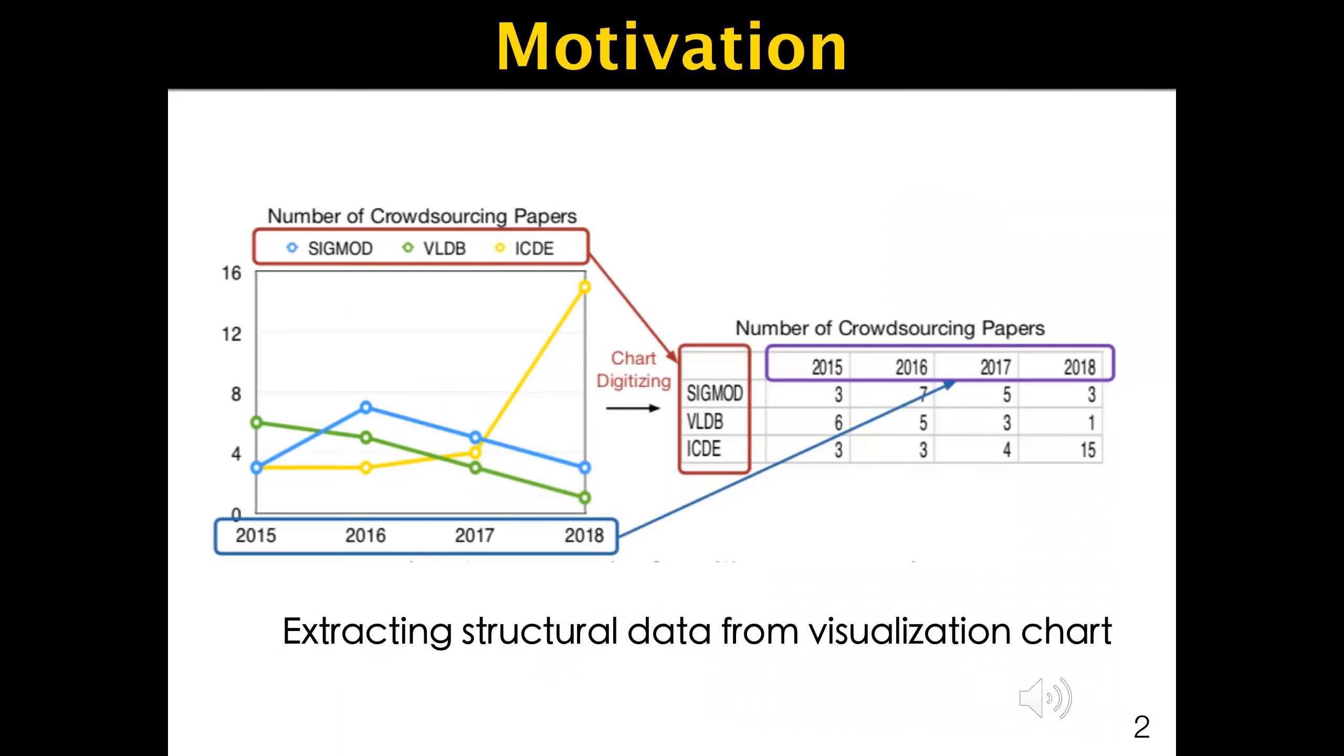For example, as shown in the figure, this visualizes numbers of crowdsourcing papers at three leading DB conferences from 2015 to 2018. If a data scientist wants to add the data of 2019, she needs to extract the data, add data, and update the figure. Therefore, this work focuses on extracting structural data from visualization charts, including the schema of the table.